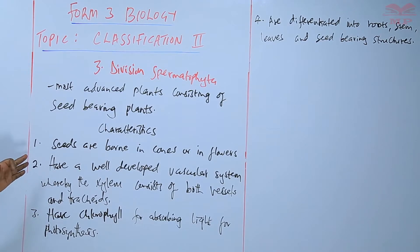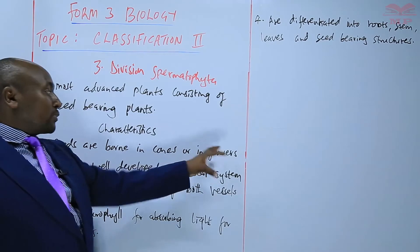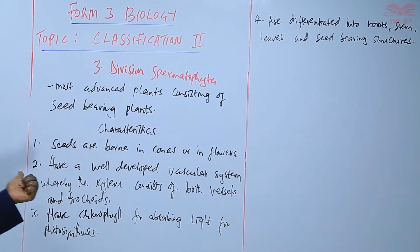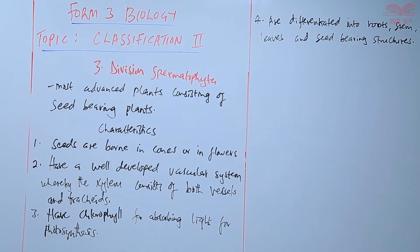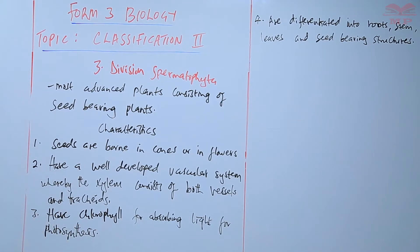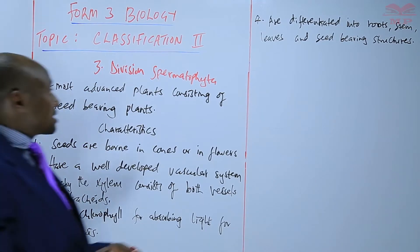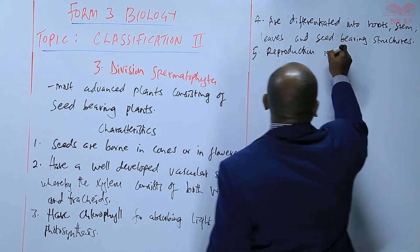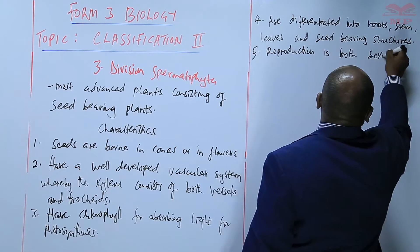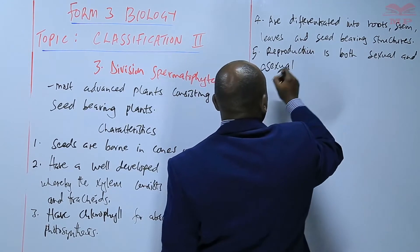So basically, they have seeds born in cones or in flowers, a well-developed vascular system with xylem vessels and tracheids, chlorophyll for photosynthesis, and they are differentiated into roots, stem, leaves, and seed-bearing structures. Reproduction is both sexual and asexual.